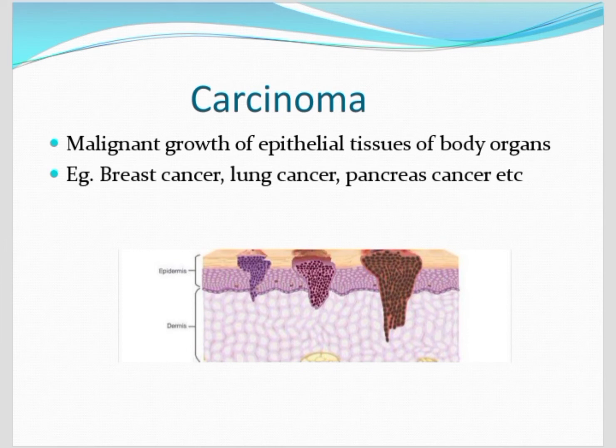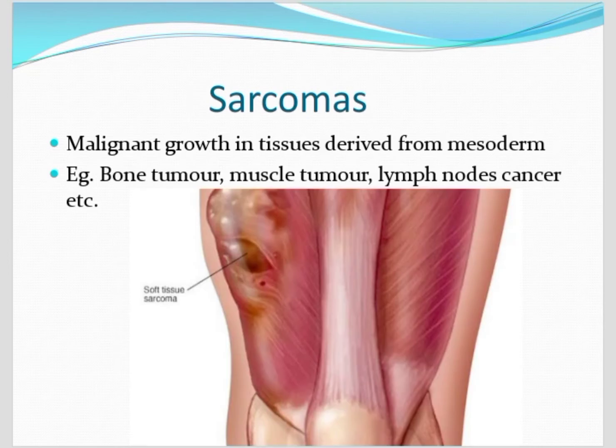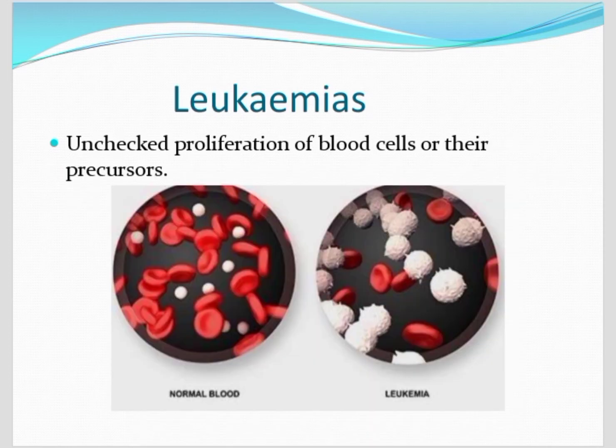pancreas cancer, etc. These are carcinomas. Malignant means uncontrolled growth takes place in the cells. Next, sarcomas — malignant growth that takes place in the tissues derived from the mesoderm, that means bone tumor, muscle tumor, lymph node cancers are examples for sarcomas.